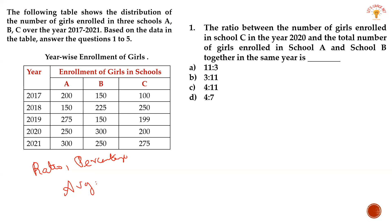DIY basic operations: addition, subtraction, multiplication, division, average, ratio, and percentage. In the basics, let's go to DIY.